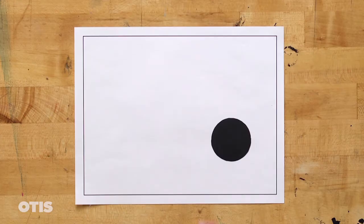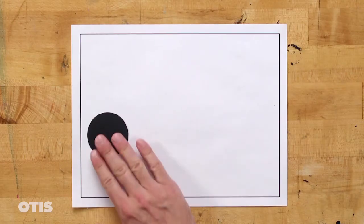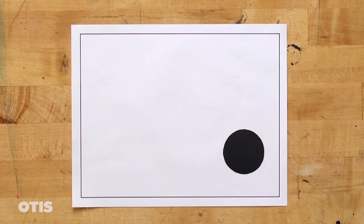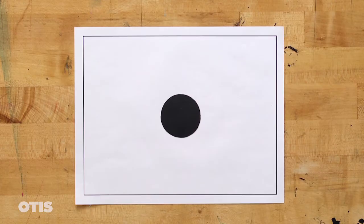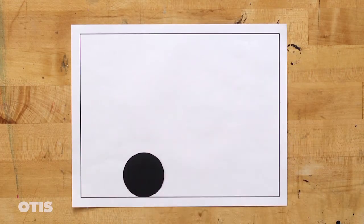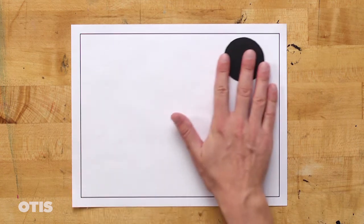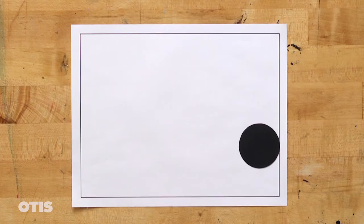While you may be aware that size can affect your focal point, an object's position can as well. You can draw even more attention to an object by placing it in the middle. Sometimes having it touch the edge of the page can make it seem larger or more prominent. Touching the edges creates tension.